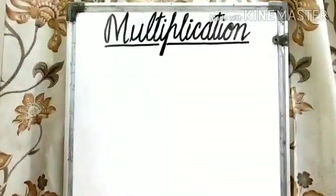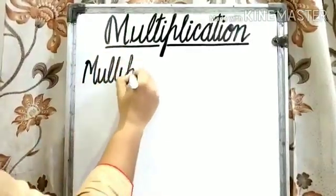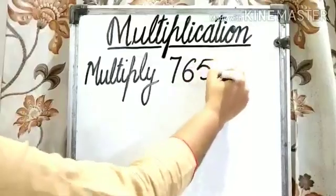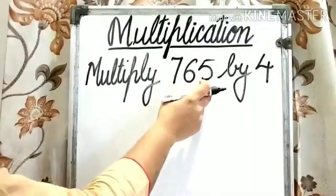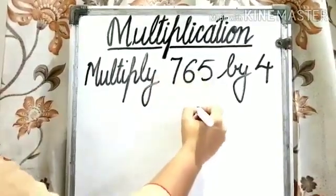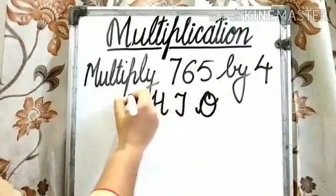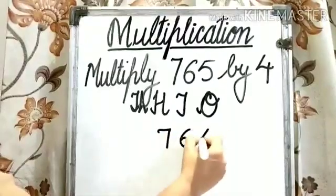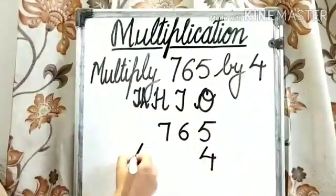Students, let's solve the next example now. Multiply 765 by 4. First of all, we need to arrange these numbers under the headings of 1s, 10s, 100s, and 1000s. So write down the headings first. 765 multiplied by 4. Put the symbol of multiplication.